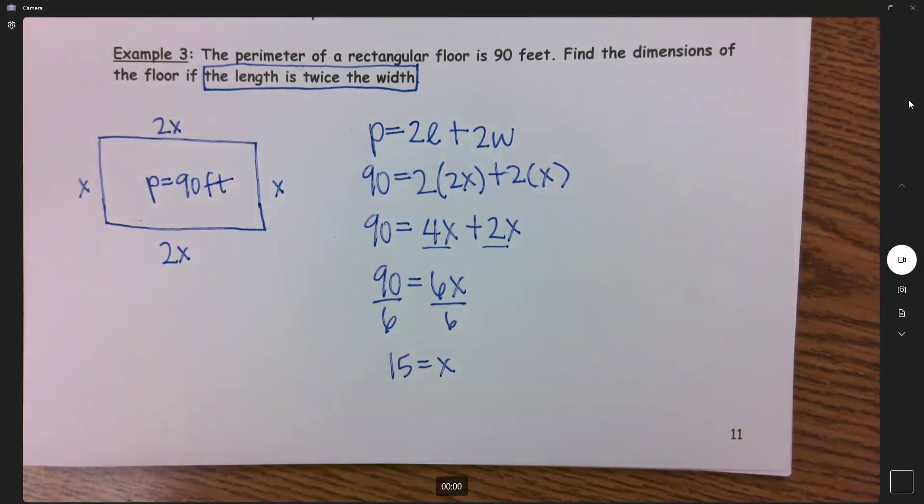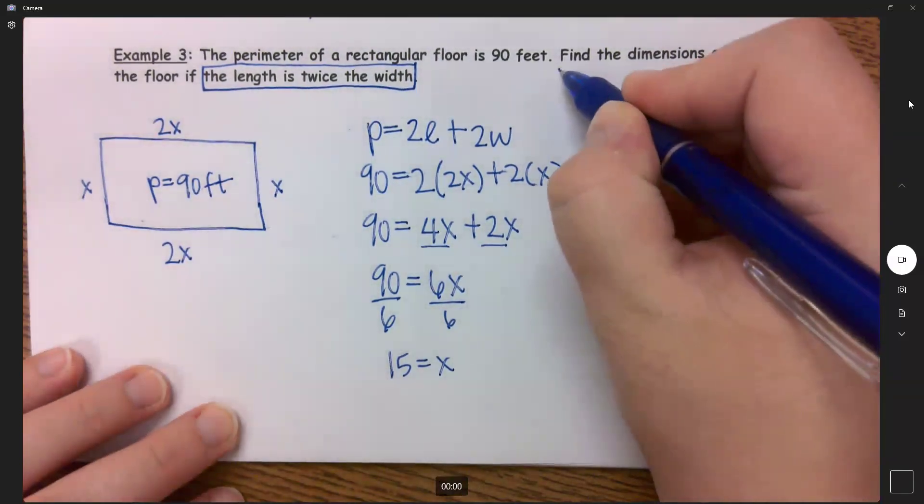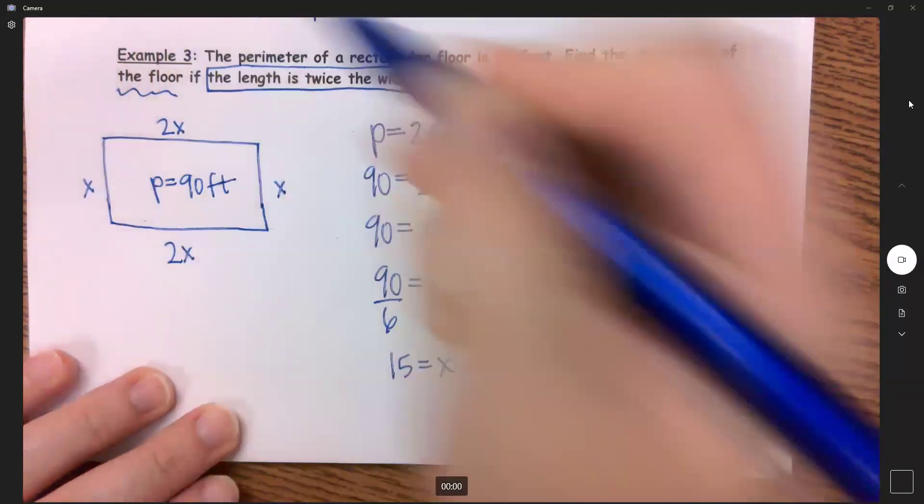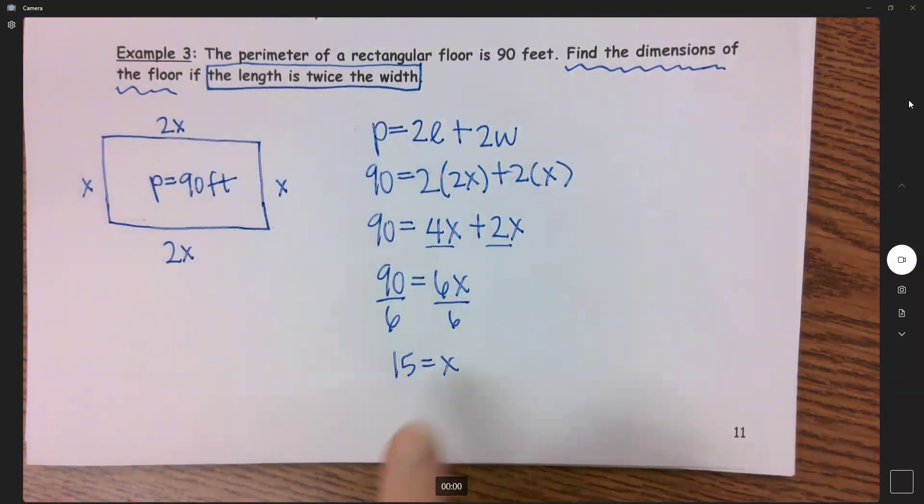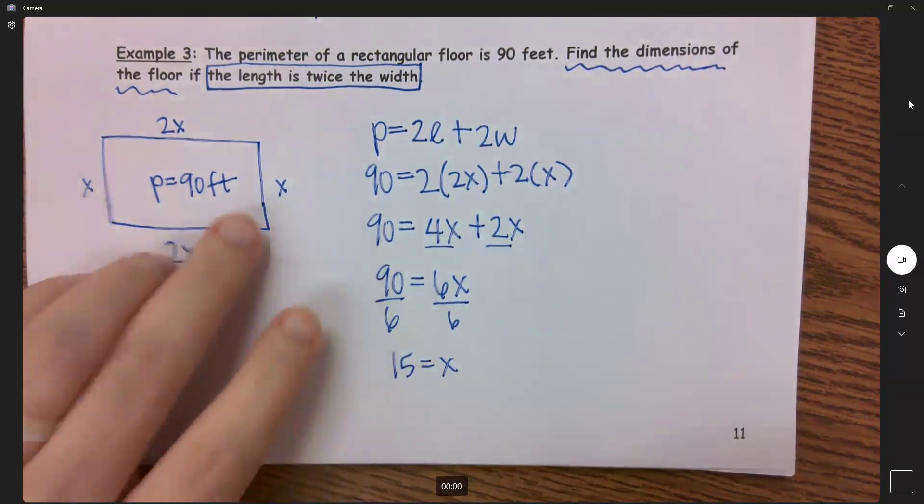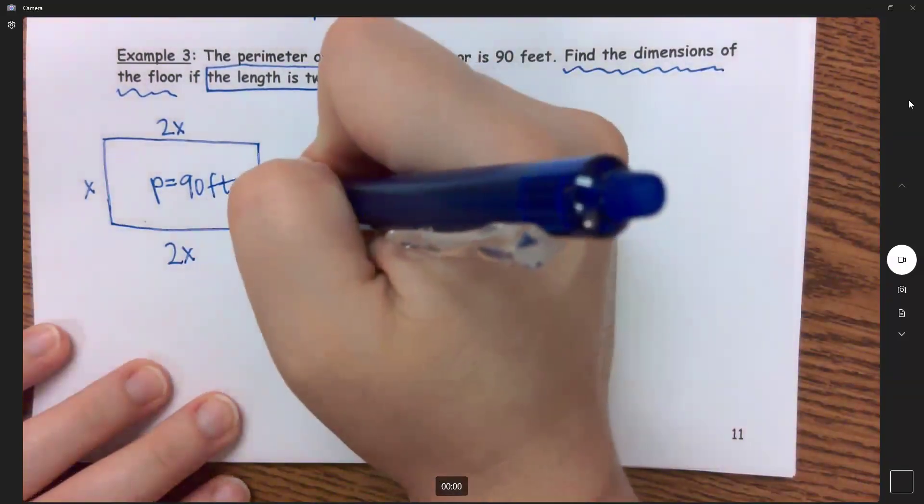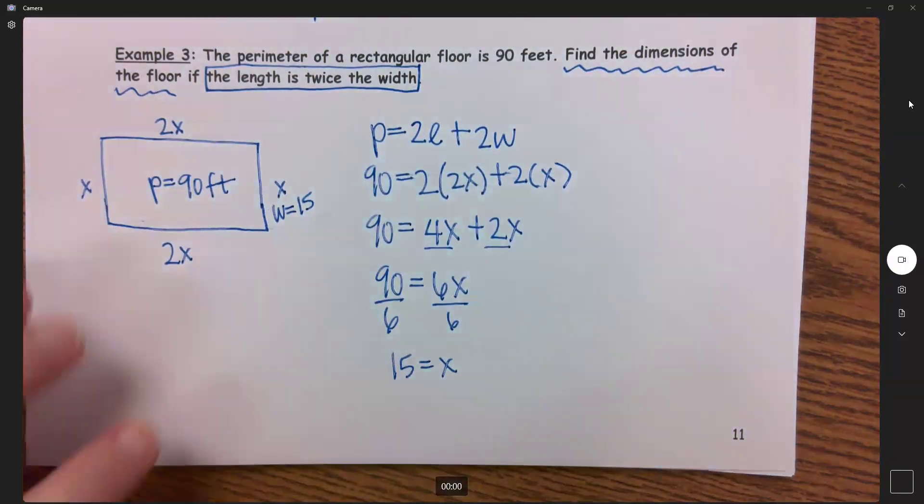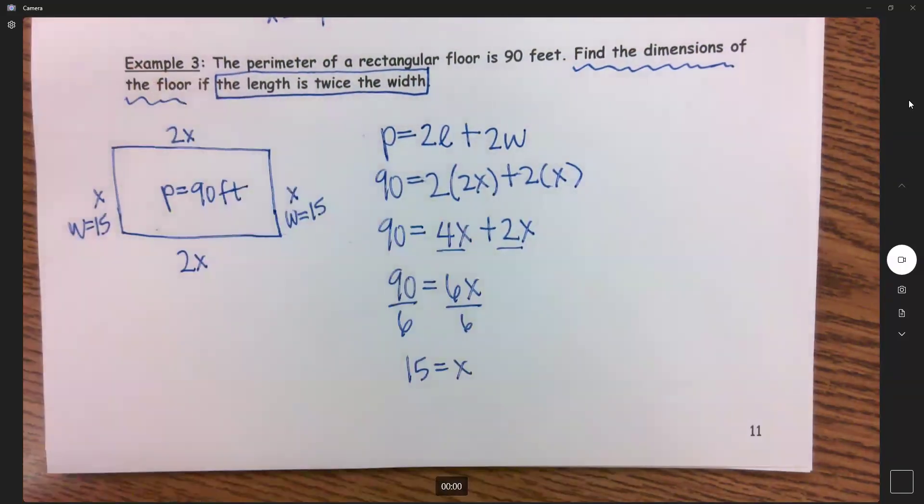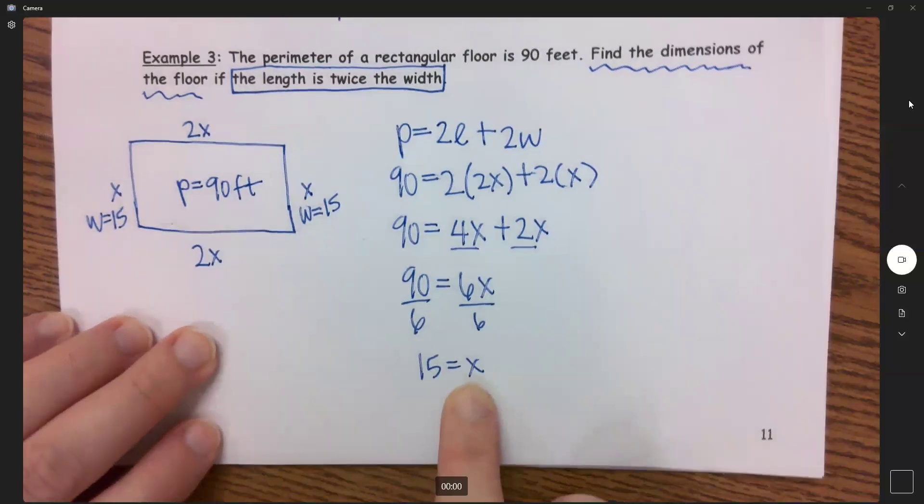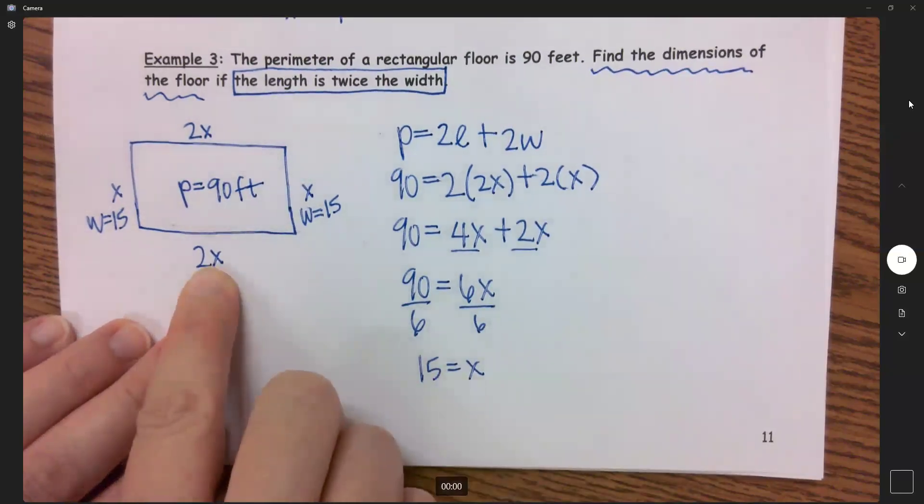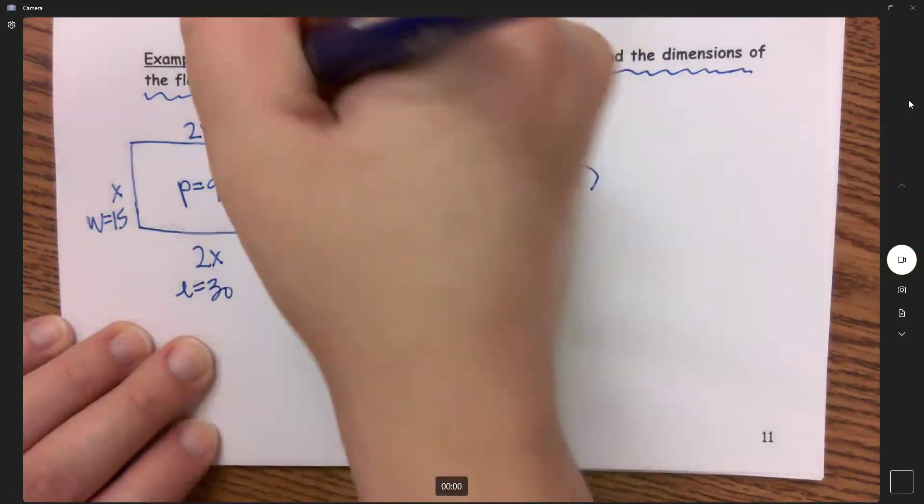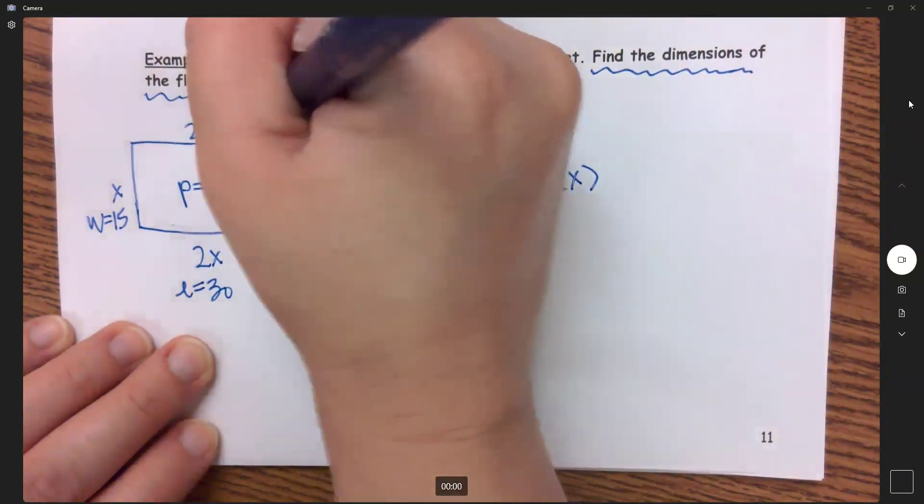So let's answer the questions. It wants us to find the dimensions of the floor. If x equals 15, then that tells me that my width right here is 15. And then if we substitute in 15 for this x, this means that my length here is 30.